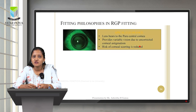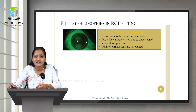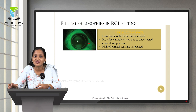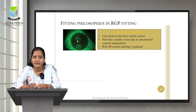Moving on to RGP fitting, there are three fitting philosophies. The first is apical clearance, where the lens bears on the paracentral cornea rather than the apex, resulting in variable vision due to uncorrected corneal astigmatism. The lens rests in the paracentral cornea with a black space indicating clearance at the center, which reduces the risk of corneal scarring.